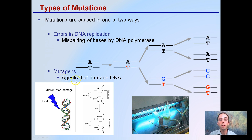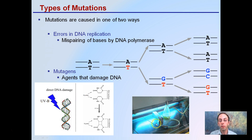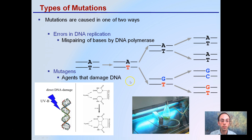Or mutagens — these are agents that can damage DNA. That can occur from UVB light; ultraviolet light from sun rays has a lot of this. That can cause these types of mutations and errors in the sequences in the DNA.